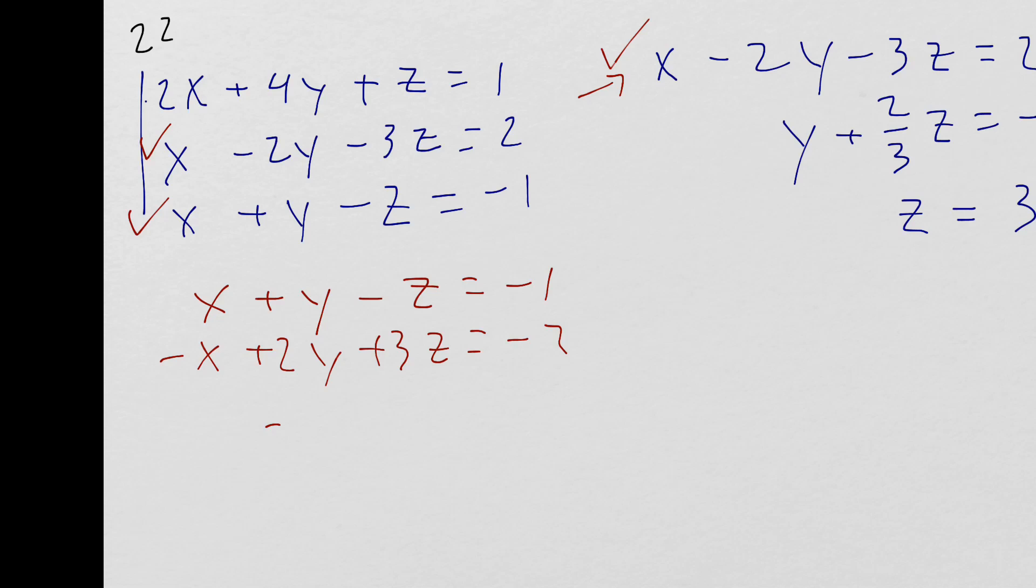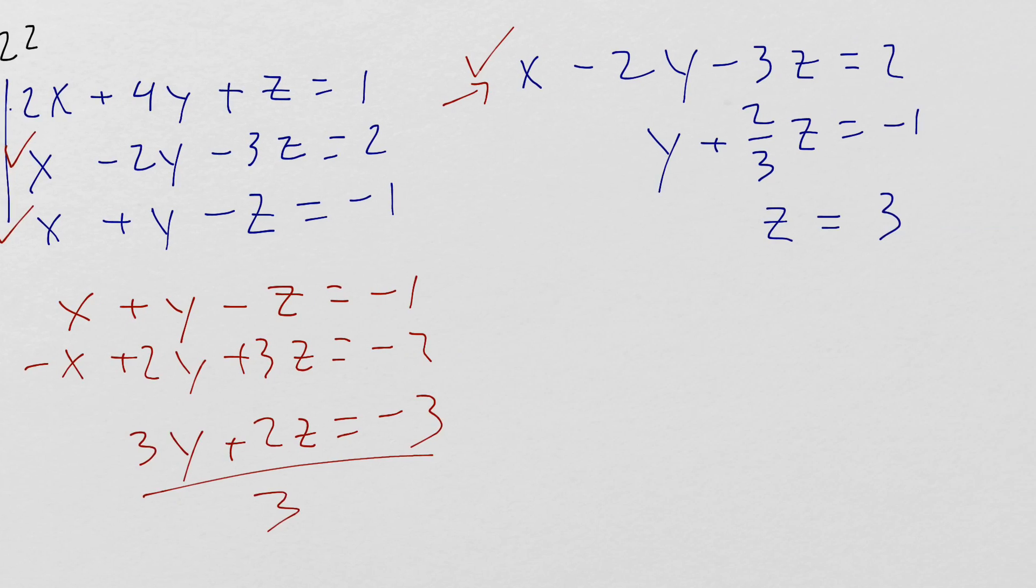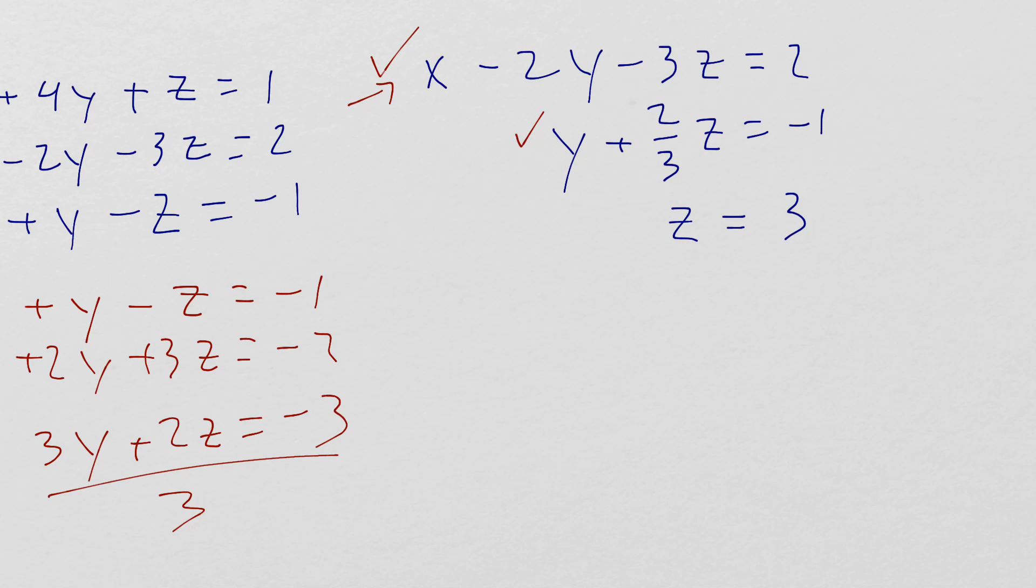If I add these two equations together, I get 3y plus 2z equals negative 3. Divide everything by 3, and I get this equation right here.